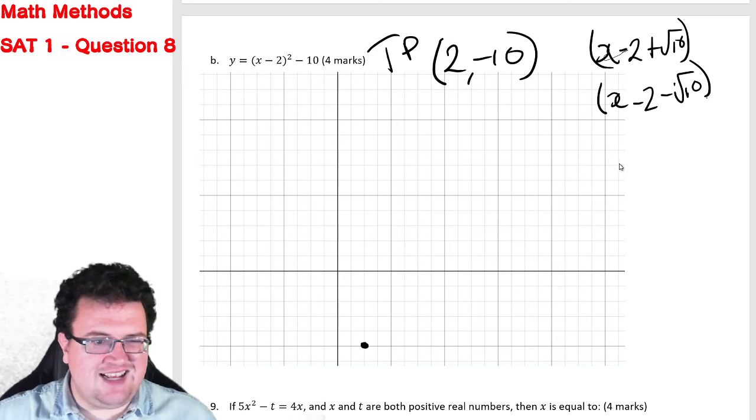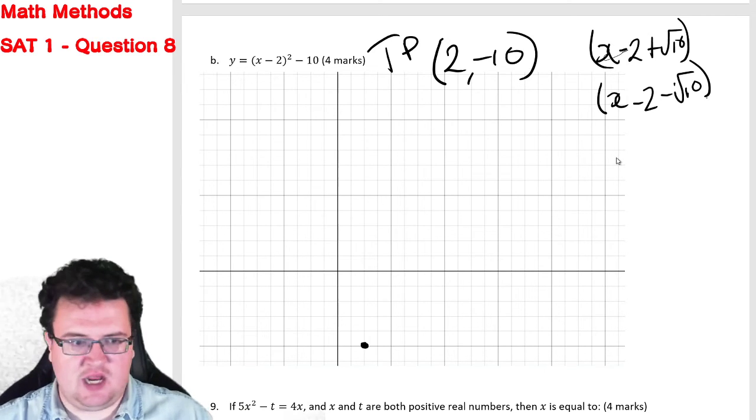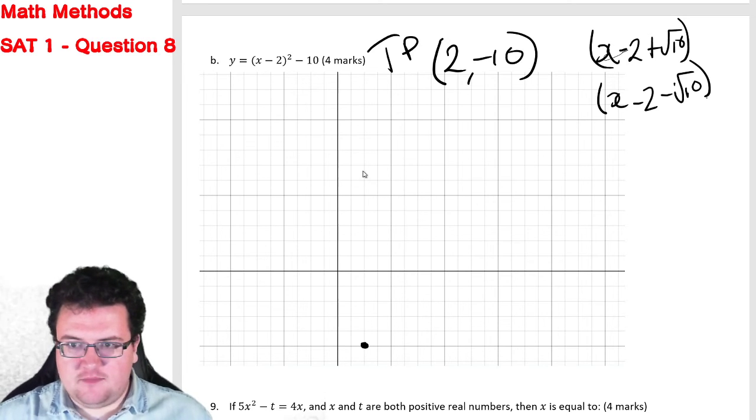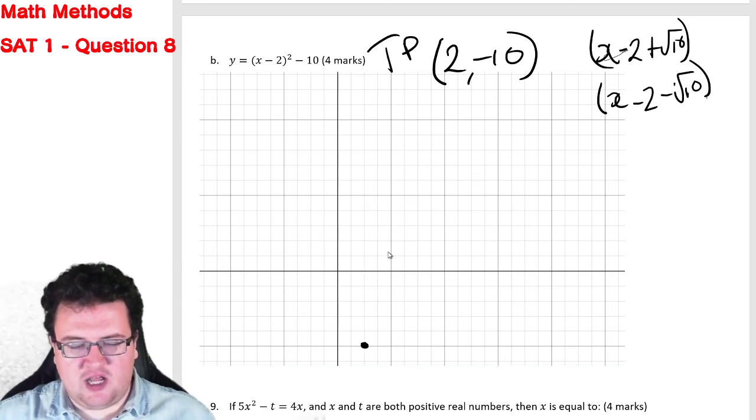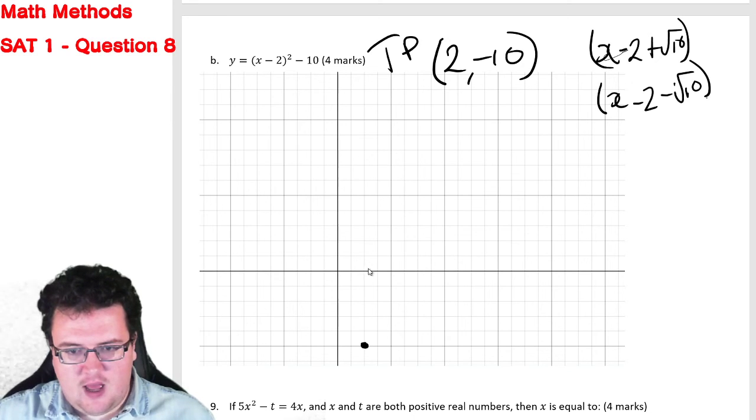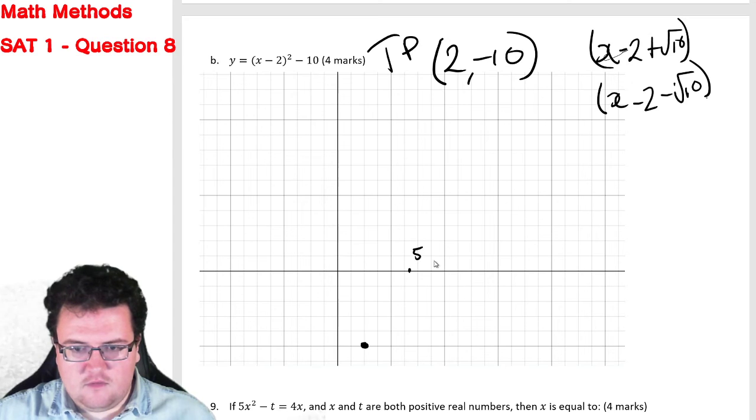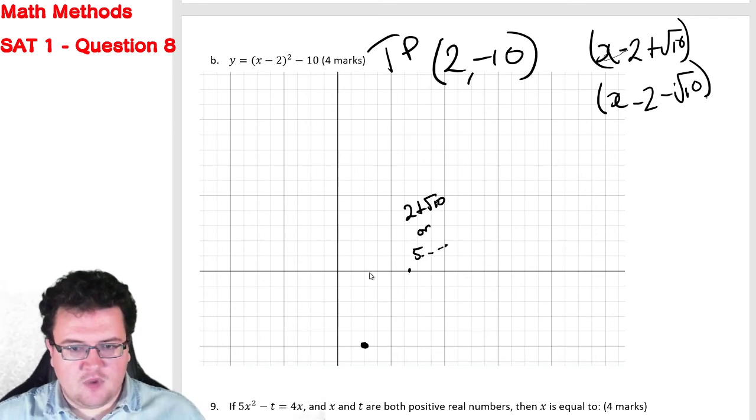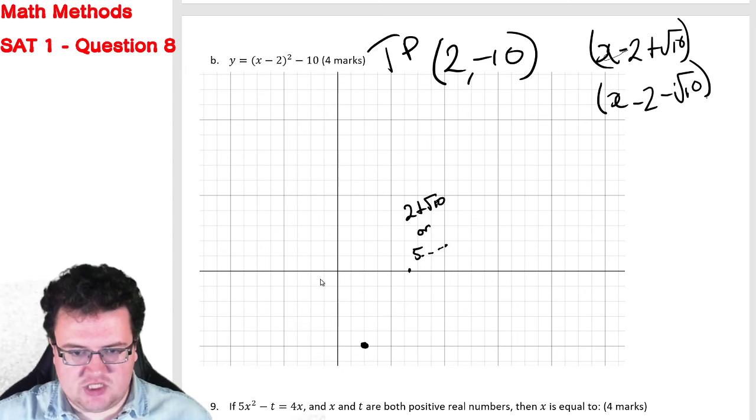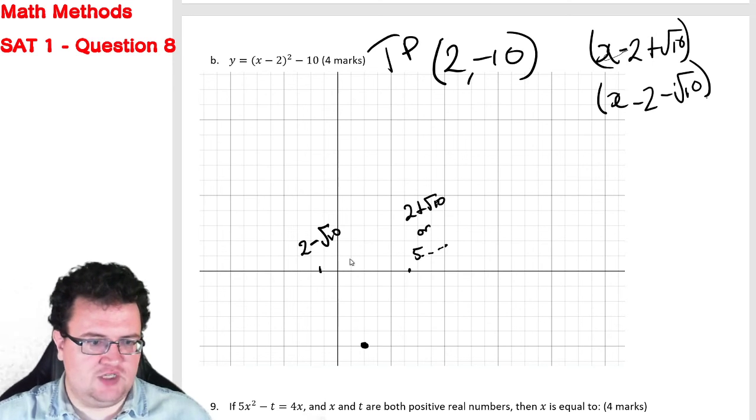Now remember, root 10 is about 3, 3 and a bit. So if you think about it as being 2 plus 3 and a bit, that gets you to about, so it's 2, 3, 4, 5 and a bit. You would call that 5, or you'd call 2 plus root 10. And then if you think about 2 minus root 10 minus 3 and a bit, it's going to come out to about here, so that's going to be 2 minus root 10 or minus 1 and a bit.